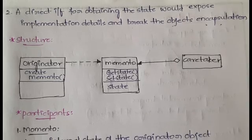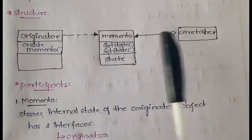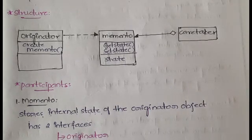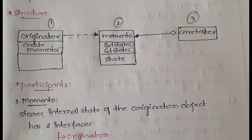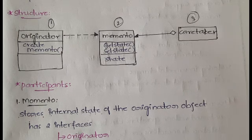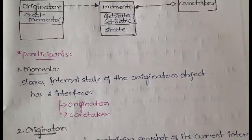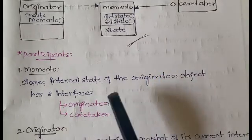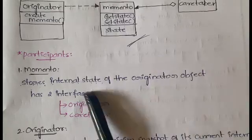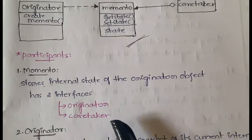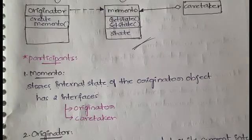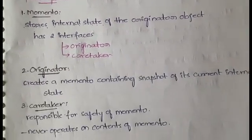The structure of the Memento pattern includes three participants: Originator, Memento, and Caretaker. In the structure, you draw these and describe each participant. The first participant is Memento — it stores the internal state of the Originator object. Memento has two interfaces: one for the Originator and one for the Caretaker.